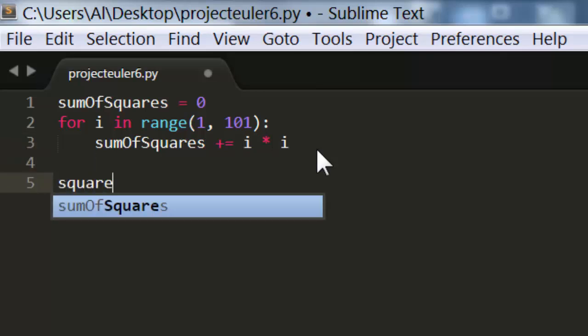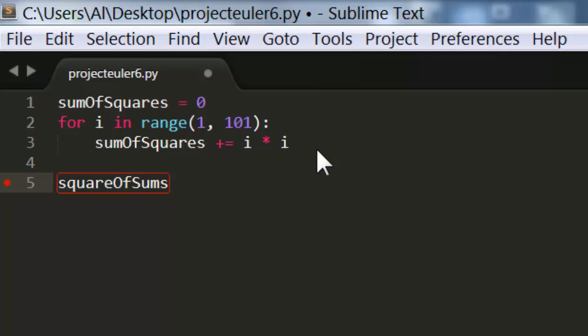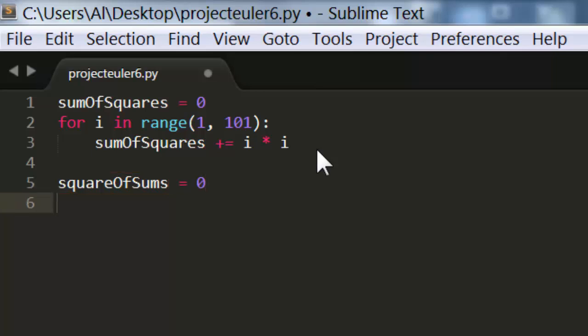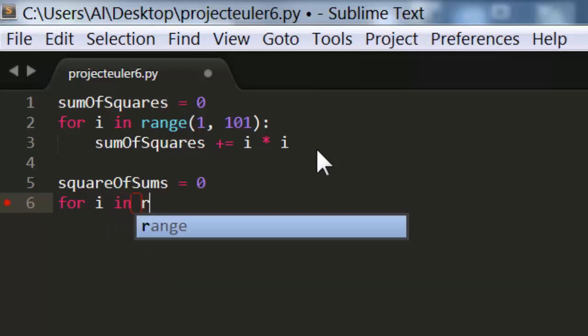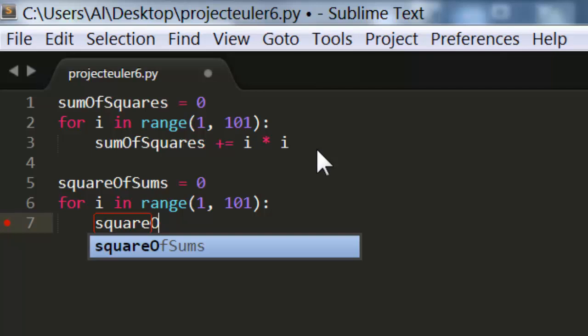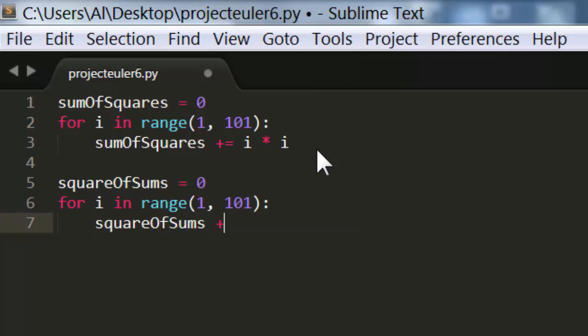Next we want to calculate the square of sums. And this is going to be a little bit similar, we're going to have another for loop that also goes through all the numbers from 1 to 100, except this time what we want to do is add up all of these numbers, just i.